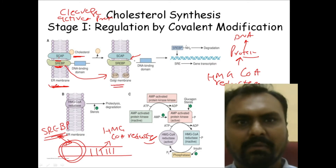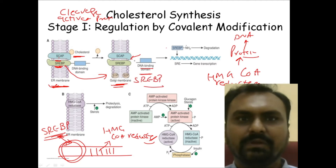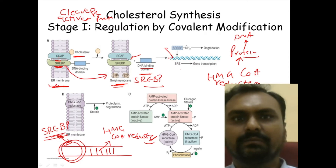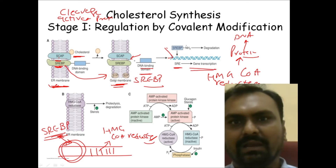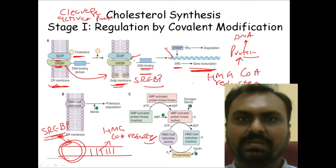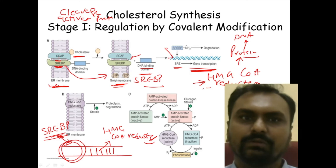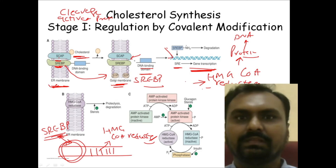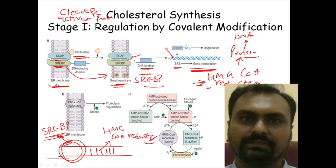At the Golgi membrane, proteases expose the DNA binding domain of SREBP, so that SREBP can bind with the promoter region of the HMG-CoA reductase gene. This helps in gene transcription, HMG-CoA reductase enzyme is synthesized, and cholesterol synthesis is promoted. So when cholesterol level is very low, at the gene level, synthesis of HMG-CoA reductase enzyme is promoted.